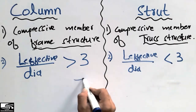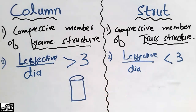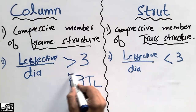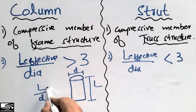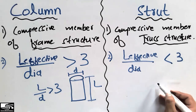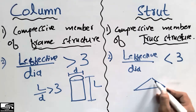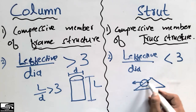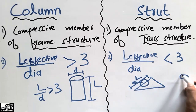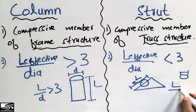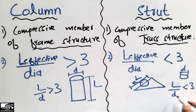For example, consider a circular column: when the effective length divided by the diameter comes out to be greater than three, we call it a column. While for a truss member, when the effective length divided by the diameter of the member is less than three, we call it a strut member.